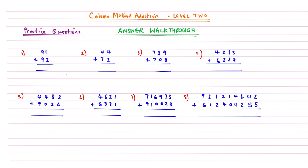Here is the quick answer walkthrough. Question one: remember we always start from the right-hand side — 1 add 2 is 3, then two nines gives us 18. Because this is a two-digit number, we write the 1 underneath an invisible column, giving us 183.